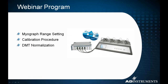What we're going to be talking about today is calibrating the DMT myograph. Specifically, we're going to focus on the myograph range settings first, because from our experience on the support side, that's an area where customers often miss something important. The range settings are key — you need to set those correctly and match them to the data you're going to be calibrating. Then we'll talk about the calibration procedure, and then we'll cover the DMT normalization module — essentially everything you need to know to get started and begin recording data.